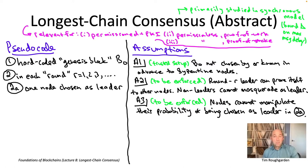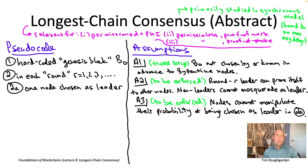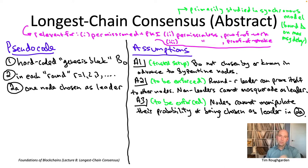In the permissionless case, proof of work works out in a simple way. Under the random oracle assumption for cryptographic hash functions, there is nothing you can do to solve the crypto puzzle other than randomly guess — keep throwing darts at a dart board until by luck you hit a bullseye. So there's no way to manipulate your probability of being selected — you're selected with probability proportional to the number of darts you throw.